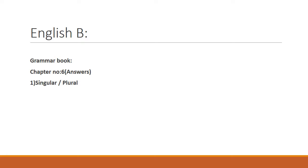Uske baad hai aapka English B ka work. Iska introduction mein aapko de deti hoon. Answers aapke paas notes pe hain. Sabse acche tarike se idea hai ki singular kisi ek cheez ko kehte hain, plural zyada cheezon ko kehte hain. Jab aapne kisi ek cheez ke liye ek cheez ko mention karna hota hai, ek cheez ka naam lena hota hai, toh aap usko singular word mein use karte hain. Jabki agar usi cheez ko zyada quantity mein describe karna hai, toh aap usko plural form mein use karte hain. Answers aapke notes pe given hain, wahan se aapne apni books ke upar write down kar lena hai aur is chapter ko aapne acche tarike se understand karna hai.